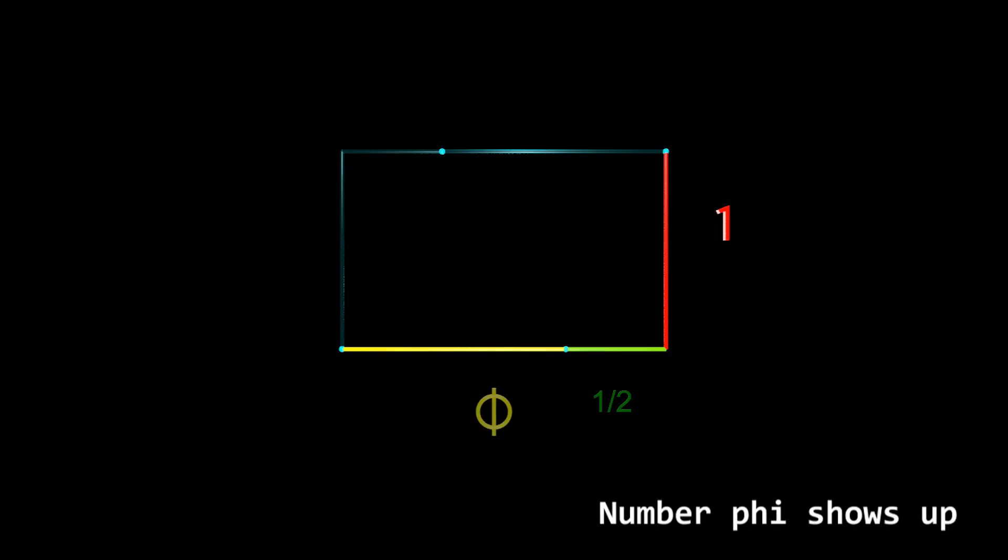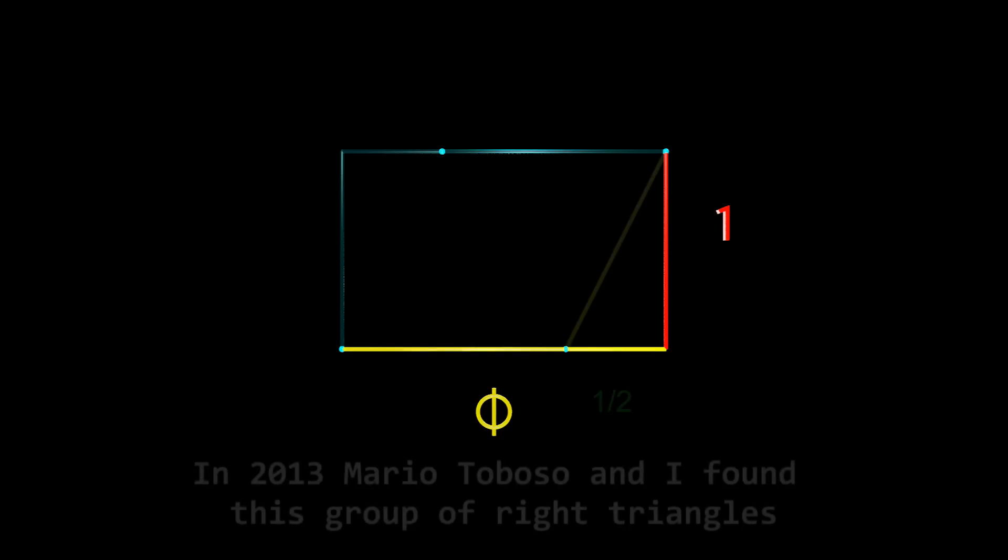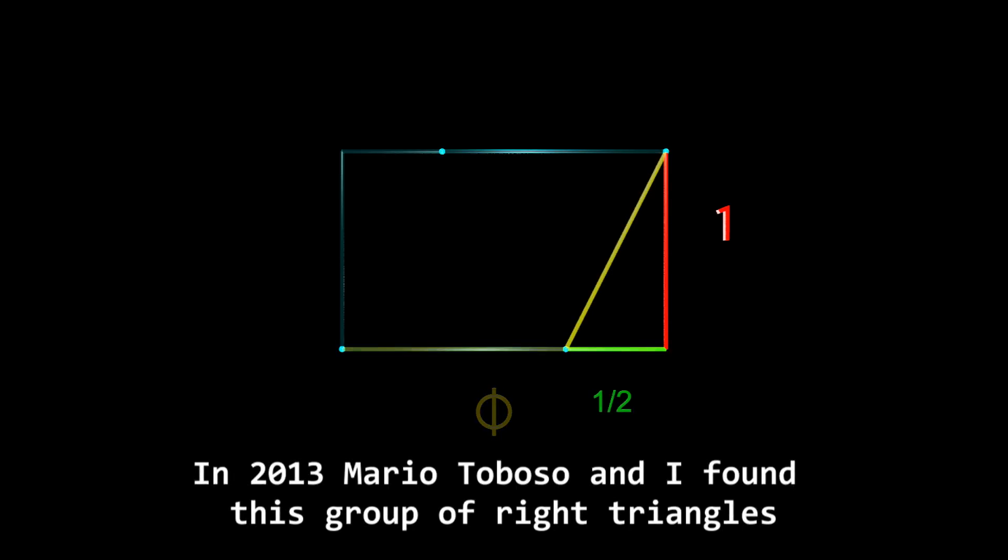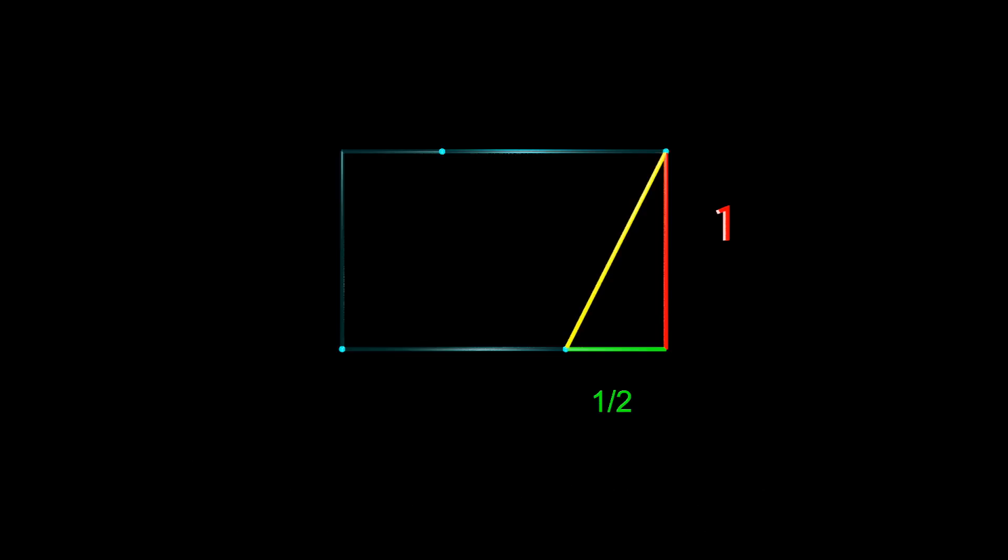In 2013, Mario Toboso and I found this group of right triangles. We named them America triangles.